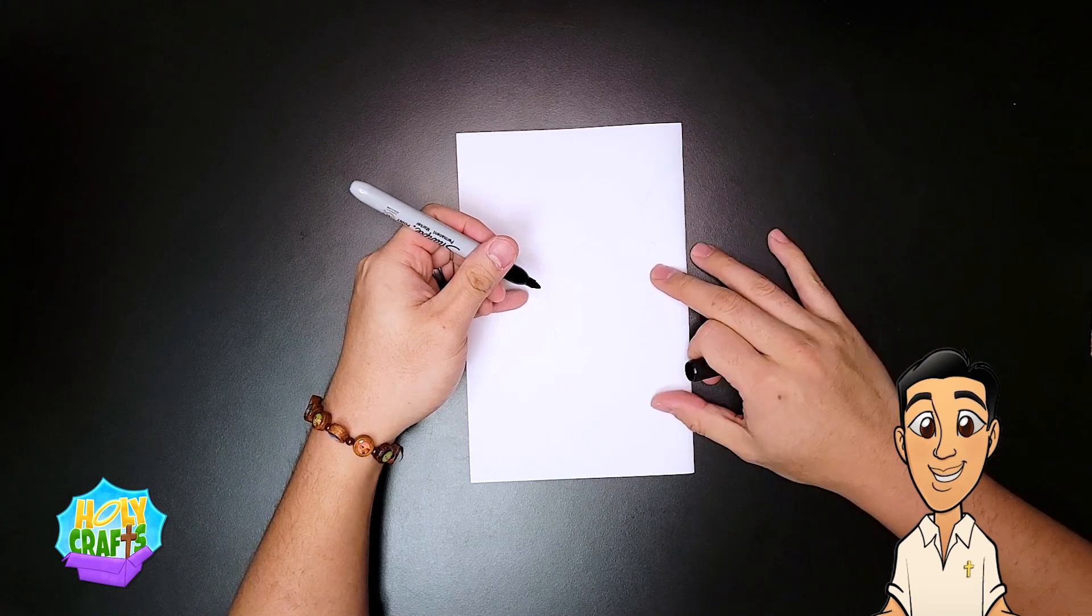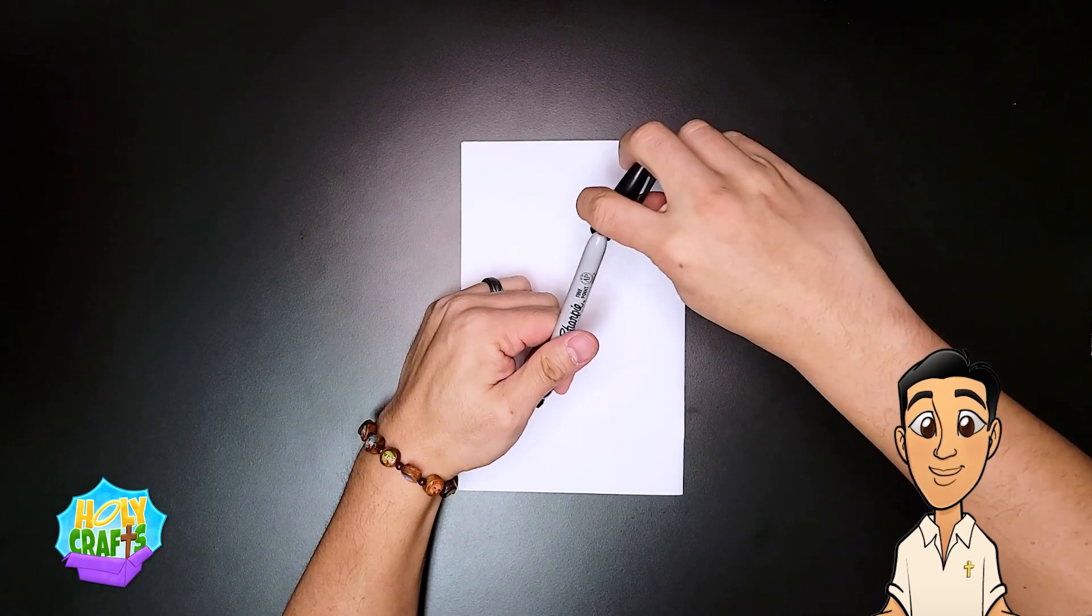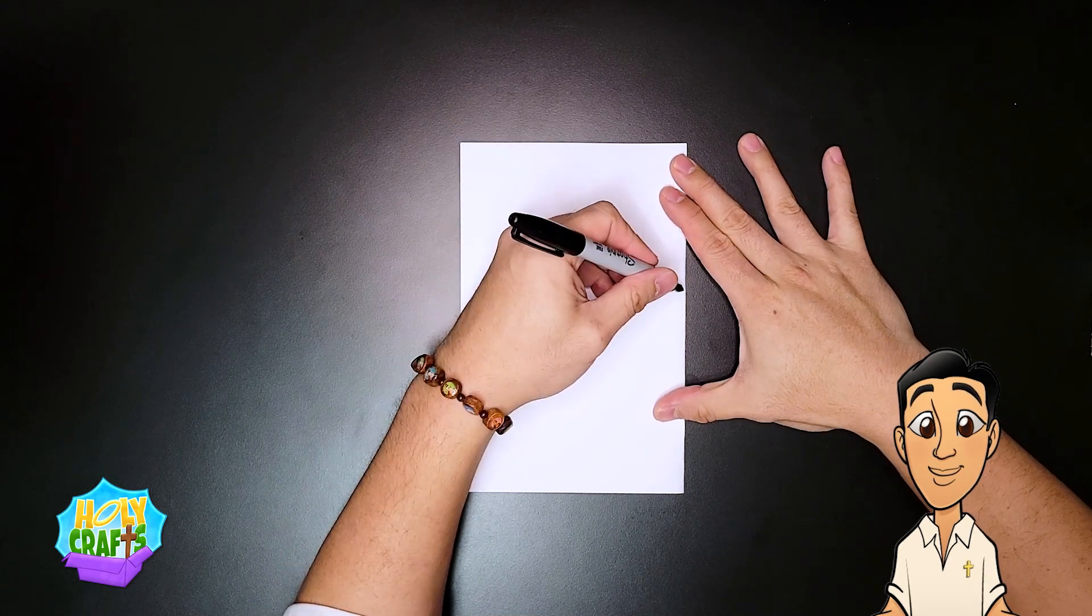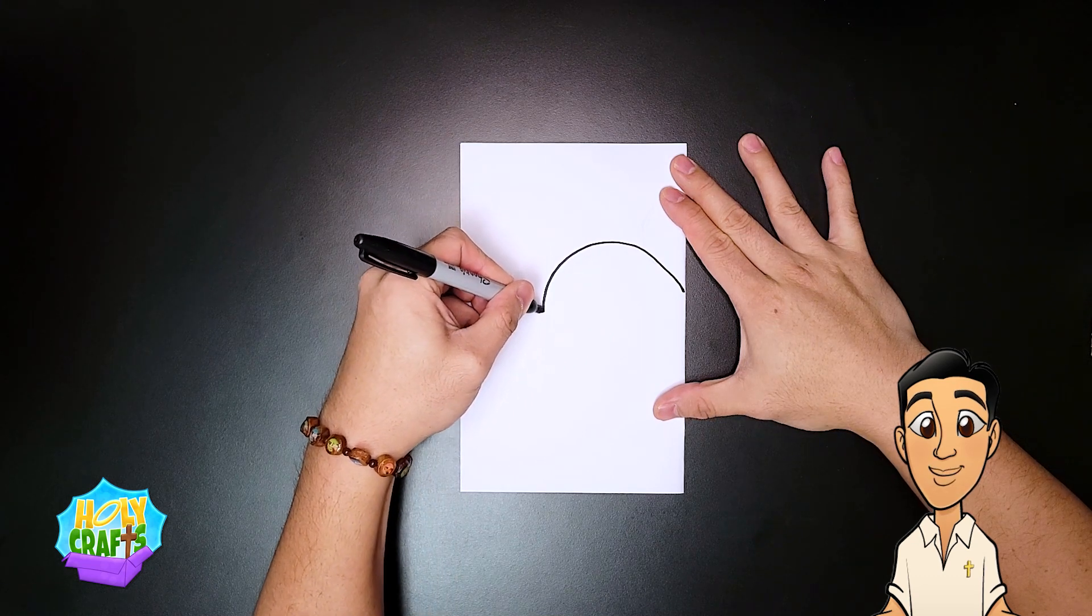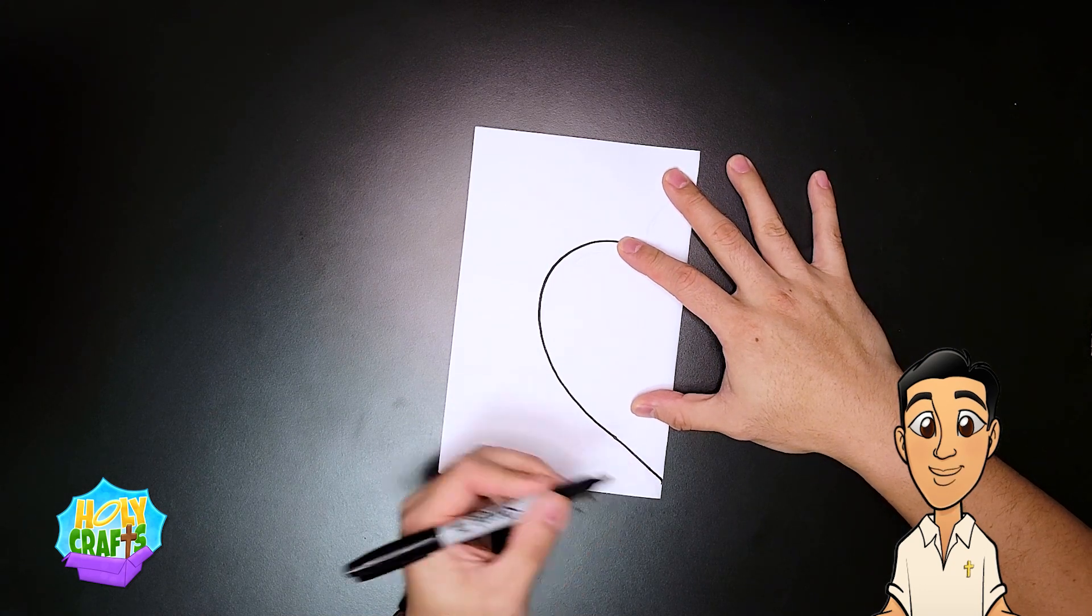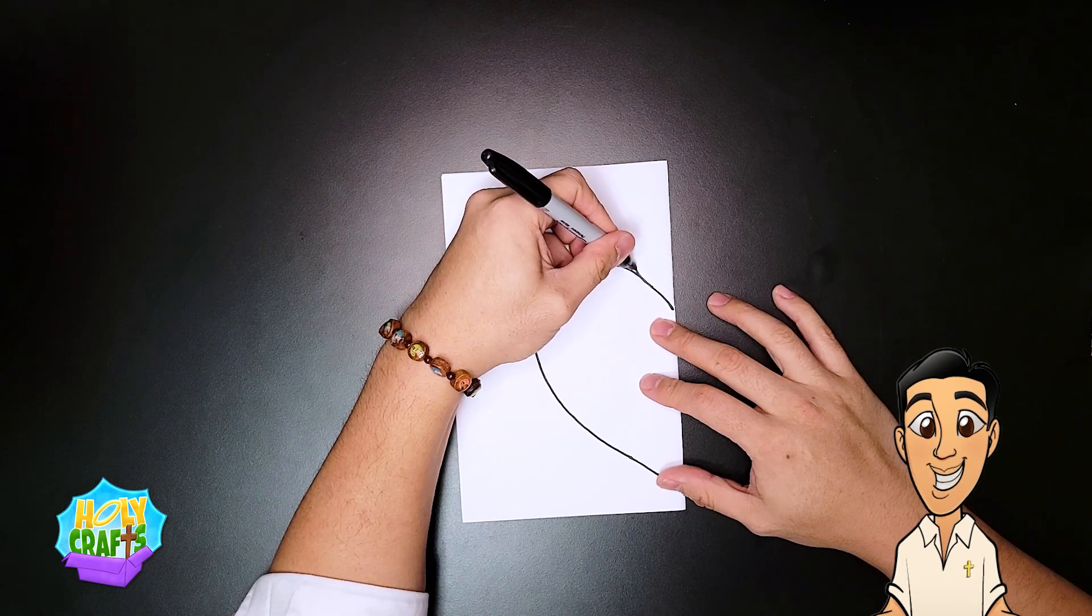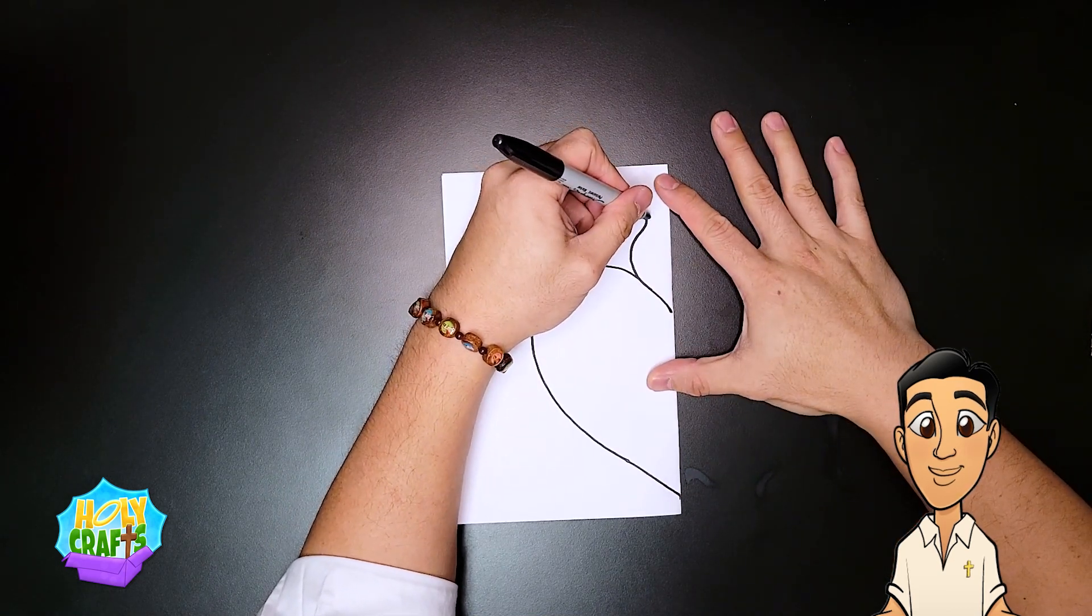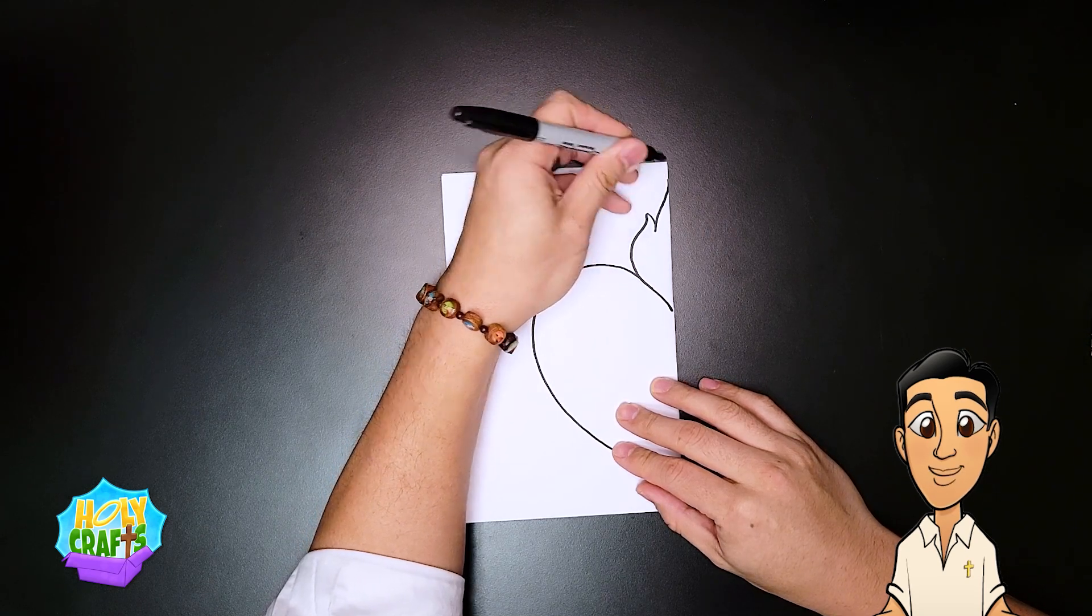Then we're going to take our pen or pencil, and we're going to draw a half of a heart. So we're just going to go up and around. It's almost like a butterfly wing. It's like a big letter C. And then on the very top, we're going to do the flame above the heart, and it's going to be a curve. We're going to go in and then back up.